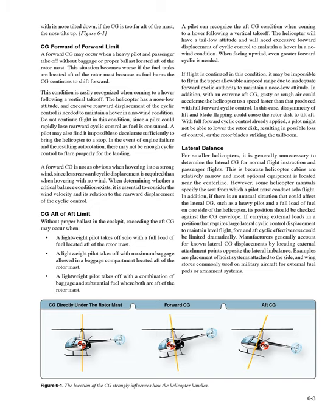CG aft of aft limit: Without proper ballast in the cockpit, exceeding the aft CG may occur when: a lightweight pilot takes off solo with a full load of fuel located aft of the rotor mast; a lightweight pilot takes off with maximum baggage allowed in a baggage compartment located aft of the rotor mast; or a lightweight pilot takes off with a combination of baggage and substantial fuel where both are aft of the rotor mast. A pilot can recognize the aft CG condition when coming to a hover following a vertical takeoff — the helicopter will have a tail low attitude and will need excessive forward displacement of cyclic control to maintain a hover in a no-wind condition.